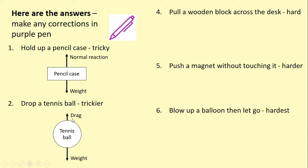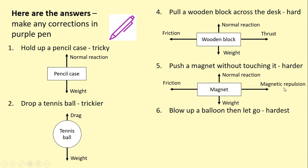Pulling a wooden block across a desk is harder, we've got more forces involved. But if we're pulling at a constant speed then we've got a thrust which is equal to the friction, they balance each other so it stays at the same speed, and we've got a normal reaction and weight as well.